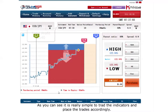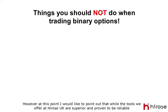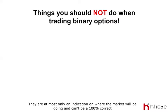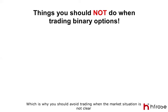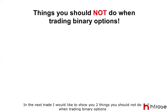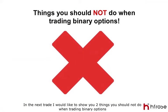As you can see, it is really simple to read the indicators and place the trades accordingly. However, at this point I would like to point out that while the tools of Udossi UK are superior and proven to be reliable, they only give an indication of where the market would be going - they can't be 100% correct. Which is why you should avoid trading when the market situation is not clear. In the next trade I would like to show you two things you should not do when trading.